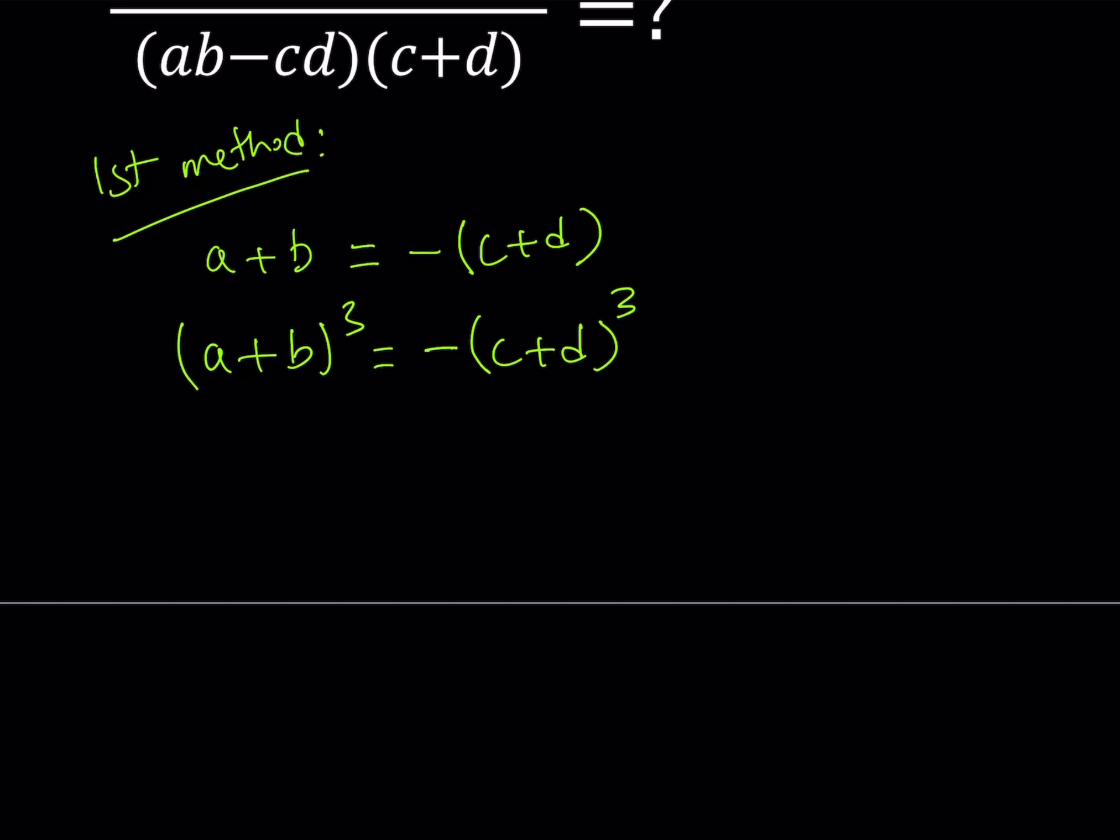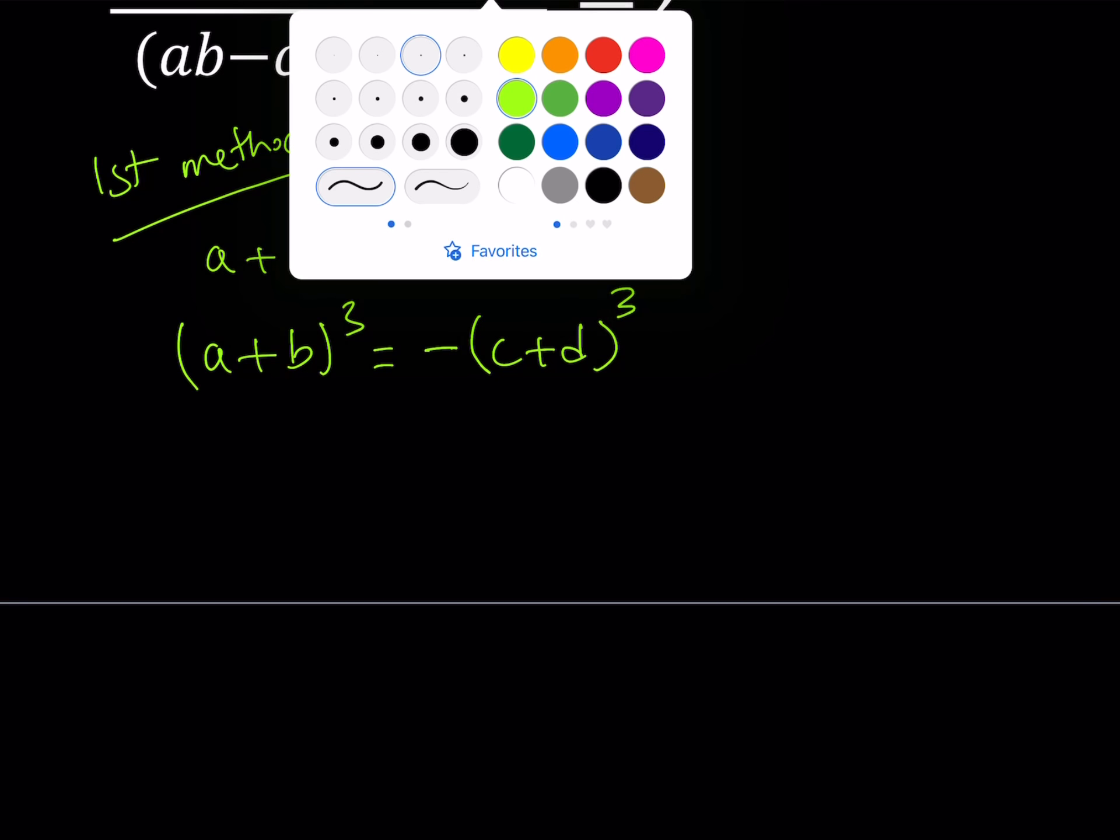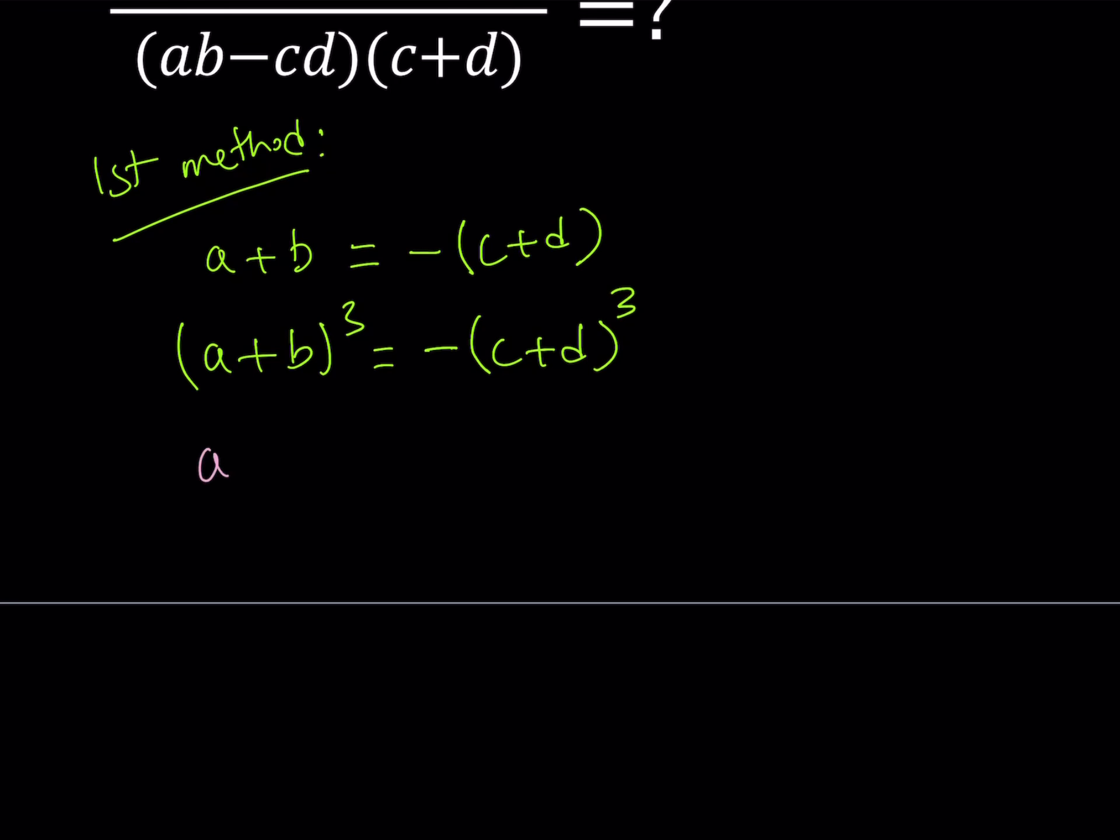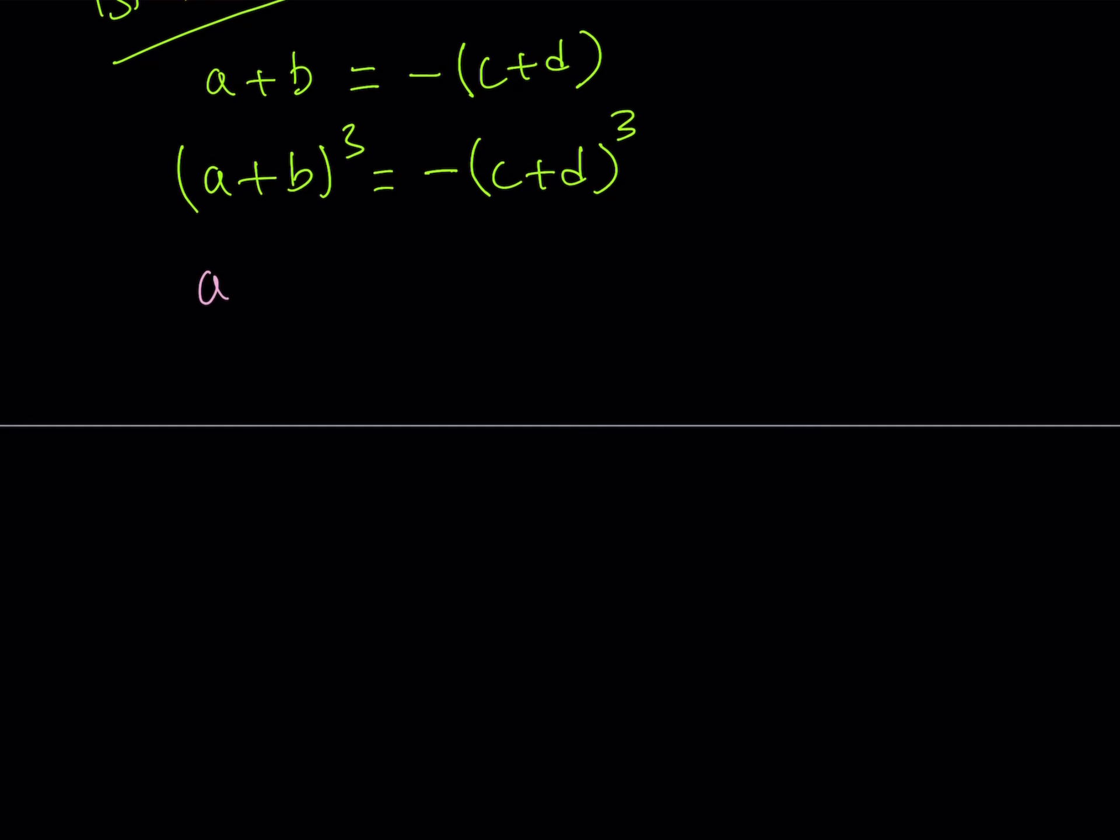For the cubing part, I'm going to use an identity that I use very often, and I believe that's a very helpful formula. The A plus B quantity cubed can be written as A cubed plus B cubed plus 3AB times A plus B. This is equivalent to using the binomial theorem. It's just factored a little bit. And the same thing happens on the right-hand side, but I do need a negative sign. So let's put that on the outside and write C cubed plus D cubed plus 3CD multiplied by C plus D.